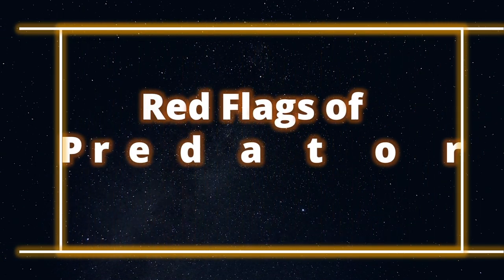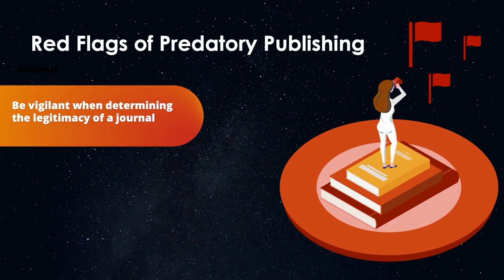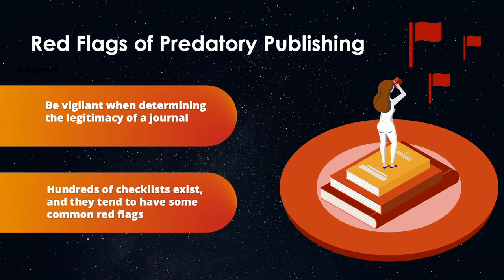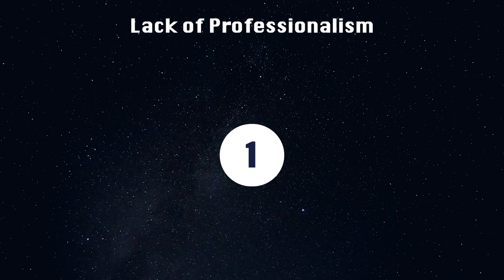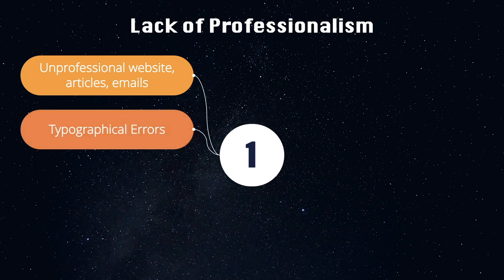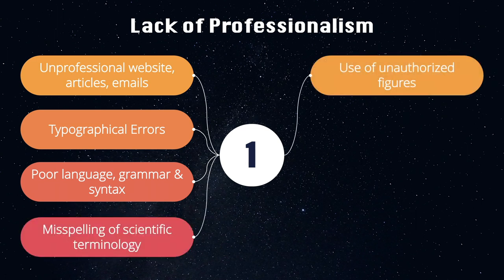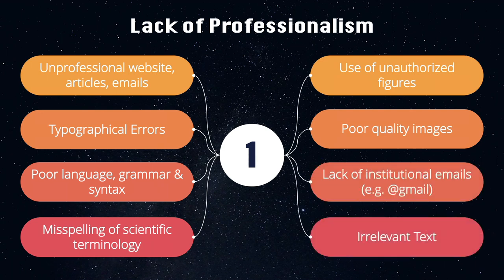We will now look at some red flags of predatory publishing. As authors and as readers, we need to be vigilant when determining the legitimacy of a journal. There are hundreds of checklists designed to help you identify potential predatory journals or publishers, and the following are red flags which these checklists tend to have in common. The first red flag is a lack of professionalism, including an unprofessional looking website, articles, and emails, typographical errors, poor language, grammar, and syntax, misspelling of scientific terminology, use of unauthorized figures, poor quality images, lack of institutional emails, and irrelevant text.